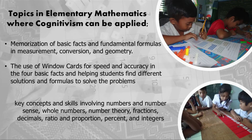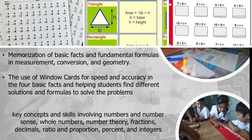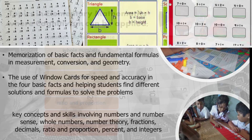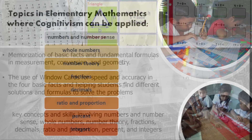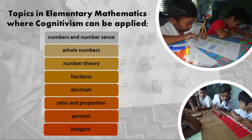Cognitivism can be applied by teachers through memorization of basic facts and fundamental formulas in measurement, conversion, and geometry. The use of window cards for speed and accuracy in the four basic facts, and helping students find different solutions and formulas to solve the problem. Key concepts involving numbers and number sense, whole numbers, number theory, fractions, decimals, ratio and proportion, percent, and integers are some of the topics in elementary mathematics wherein cognitivism can be applied.